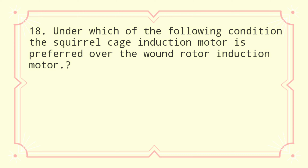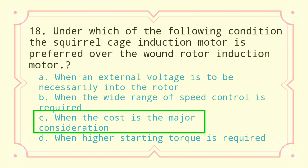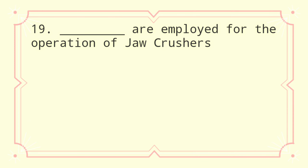Question 18: Under which of the following conditions is the squirrel cage induction motor preferred over the wound rotor induction motor? a) when external voltage is to be necessarily introduced into the rotor, b) when wide range of speed control is required, c) when cost is the major consideration, d) when higher starting torque is required. The correct answer is when cost is the major consideration.